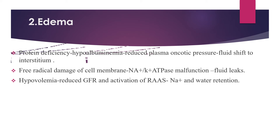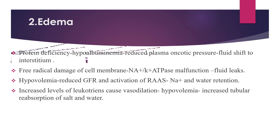Hypovolemia can happen from diarrhea, which is common in malnutrition patients. Hypovolemia also occurs from increased levels of leukotrienes, causing vasodilation and secondary hypovolemia, which causes increased tubular reabsorption of salt and water, leading to edema.